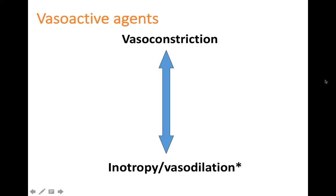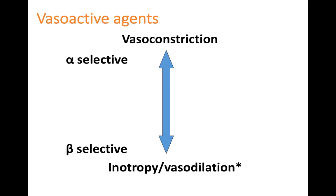Here's another way of thinking about vasoactive agents — a spectrum of vasoconstrictive activity versus inotropy or vasodilatory activity. Agents that are more alpha-selective are going to vasoconstrict, whereas agents that are more beta-selective are going to cause inotropy, increased heart rate, and increased contractility. Those with beta-2 activity are going to cause more vasodilation.